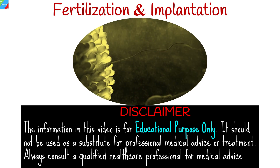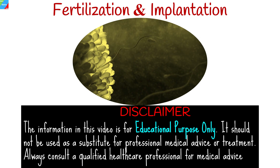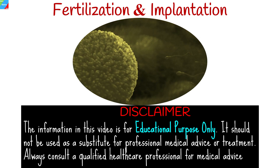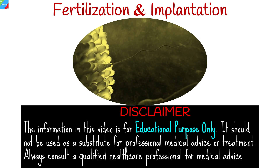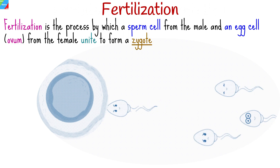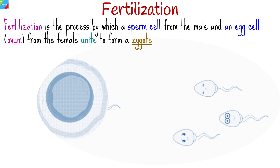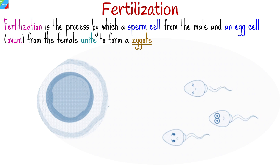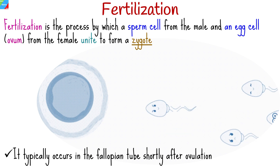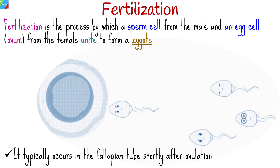In this video, we'll cover the fundamental concepts of fertilization and implantation, two crucial processes in human reproduction that lead to the development of a new individual. Fertilization is the process by which a sperm cell from the male and an egg cell, or the ovum from the female, unite to form a zygote. It typically occurs in the fallopian tube shortly after ovulation.